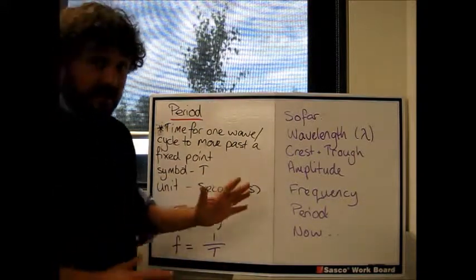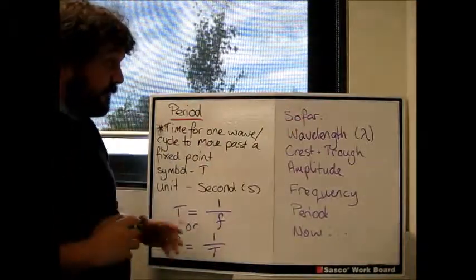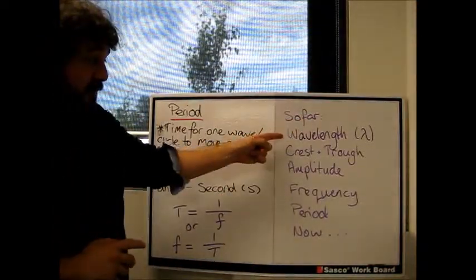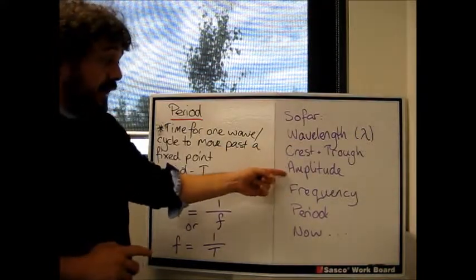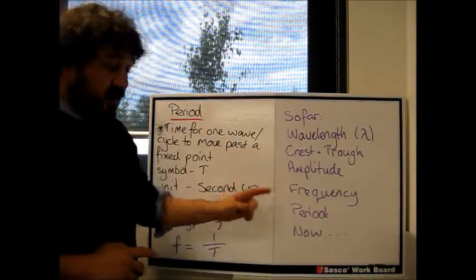Now, so far, there's seven numbers. We have six. We've got wavelength, the crest which is M, trough which is N, amplitude, frequency, period.